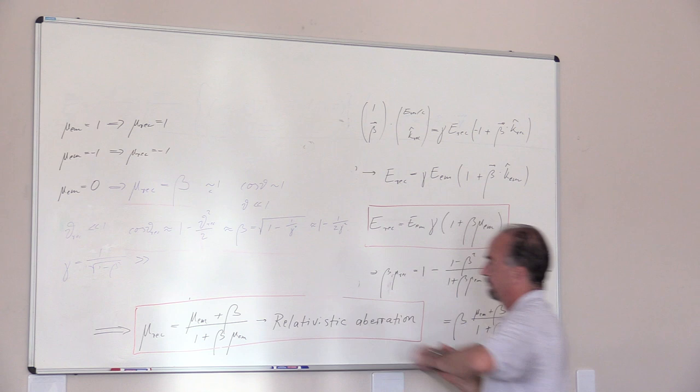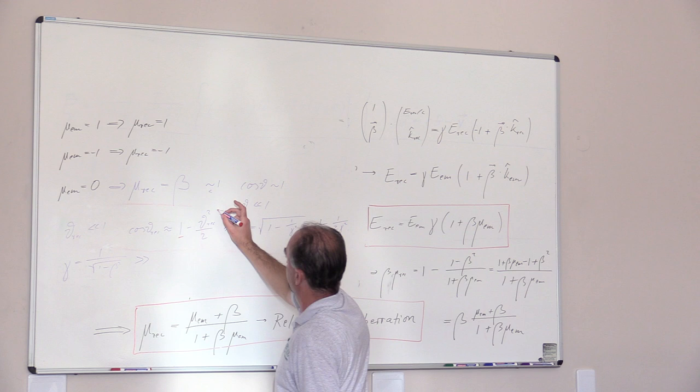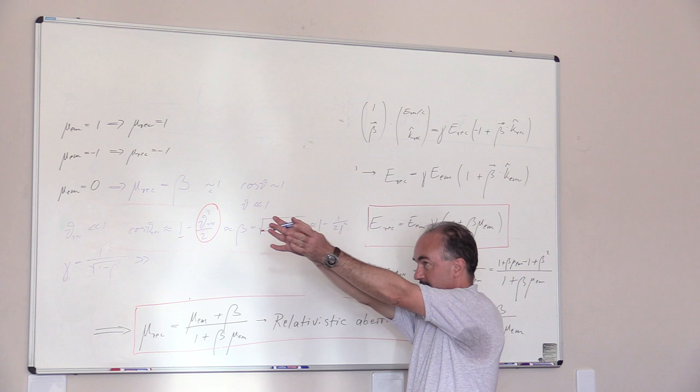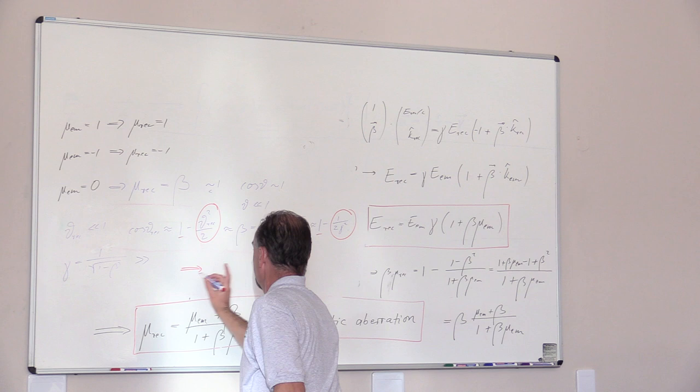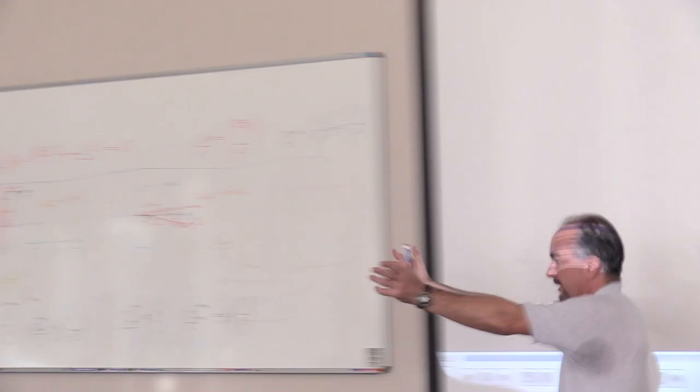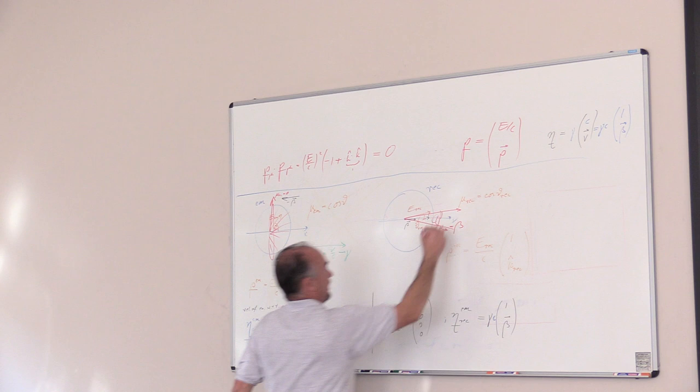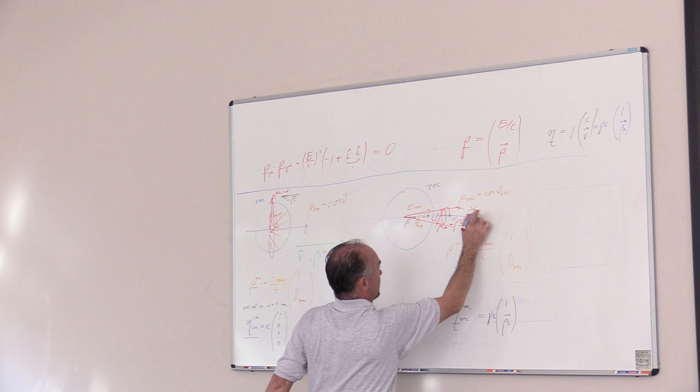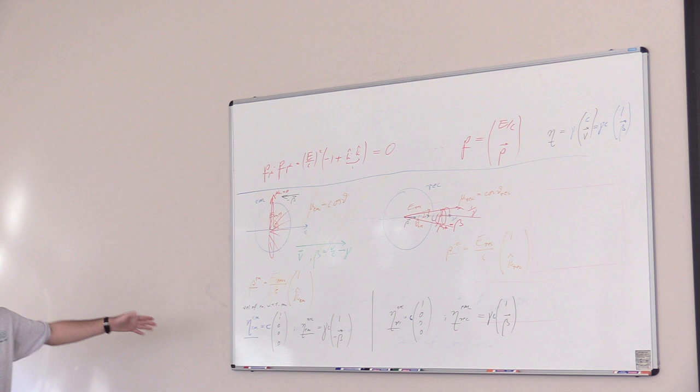So that means if the source is moving relativistically, we have the 1 here and here, and then we have the first order term. The opening angle of the cone into which half the radiation is beamed compared to this, so it tells you that essentially θ received is to first order 1 over γ. So that means if your source of light or radiation is moving with large Lorentz factor γ, everything ends up in a narrow cone here of opening angle 1 over γ going forward.